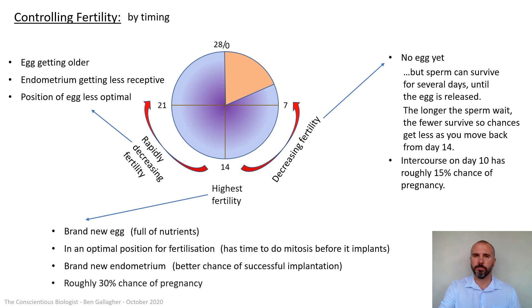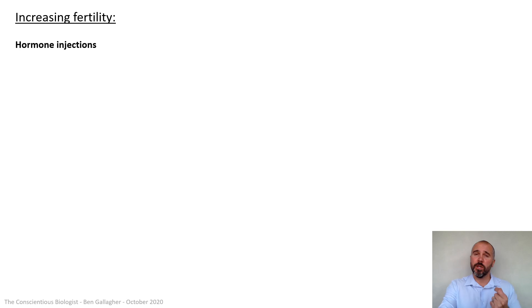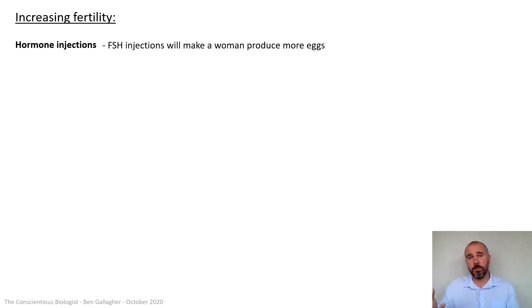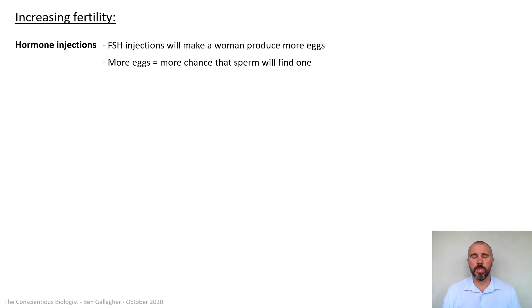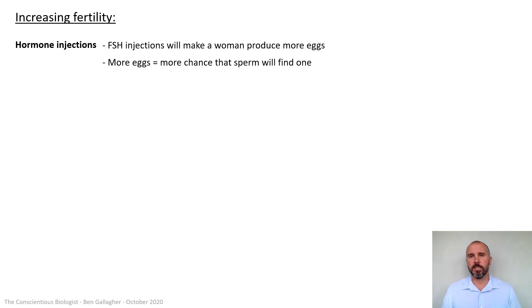For increasing fertility, the first method is using FSH injections. FSH stimulates the follicles — the immature eggs — to mature into eggs which can be fertilized. If a woman gives herself FSH injections she's going to produce more eggs each month. If she produces two eggs instead of one she doubles her chance of conception. However this can be quite dangerous because if a woman takes too much FSH or her body is too sensitive to it, she might release six eggs, and if all six are fertilized she could be pregnant with six babies — a massive stress on her body.